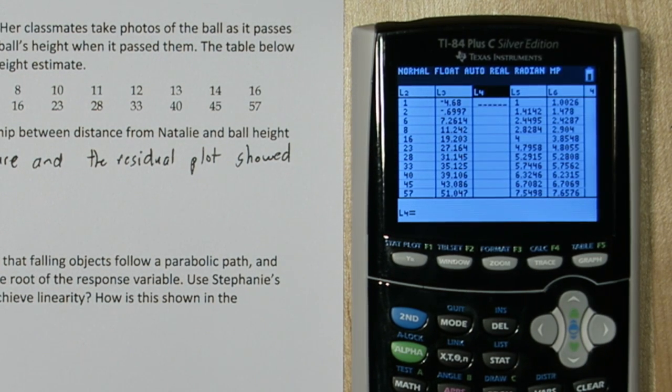Okay, list 4 is going to be our residuals of our transformed data. So that's list 5 minus list 6.